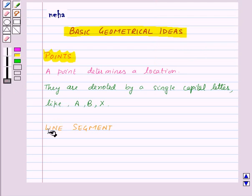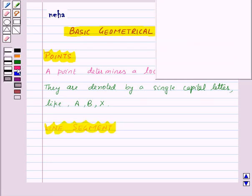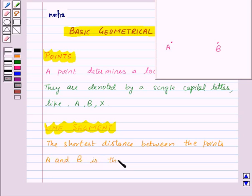Next we have a line segment. Mark two points A and B on the sheet of paper. Then the shortest distance between the points A and B is the line segment.